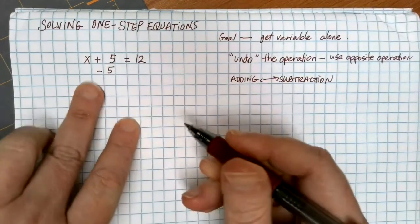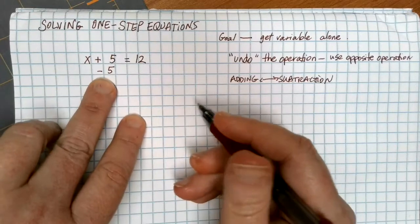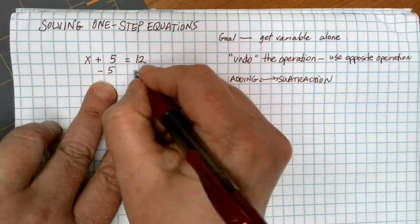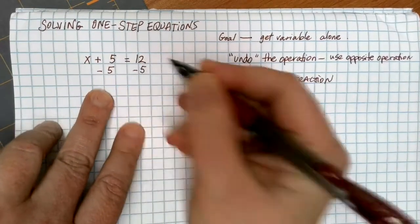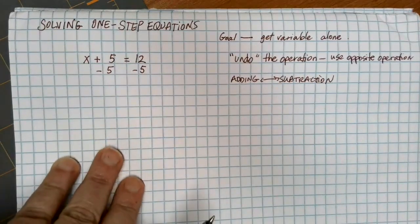The thing with an equation is, if I subtract 5 here, it's not equal anymore. So to keep things balanced, anything I do to one side of an equation, I also have to do to the other side of the equation.